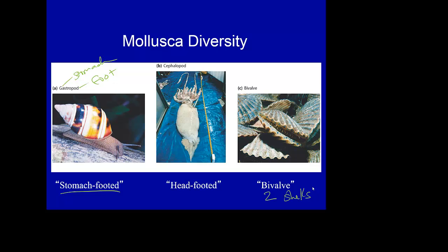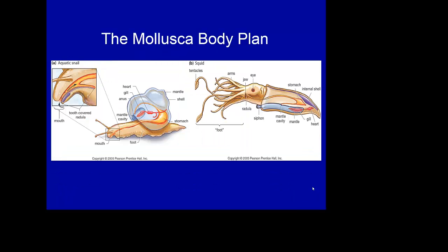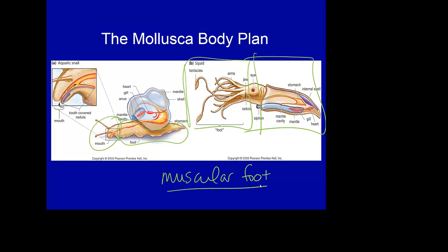The basic body plan of a mollusk is essentially foot and head. When we look at these structures, we want to understand why they are so different and why they have diversified so much from that original chiton, which actually looked more like a snail. The foot is always very muscular — whether you're a snail crawling around on your foot or whether you have tentacles for feet, they're still very, very muscular. The other thing we look at is something known as a radula, probably a new term for you.